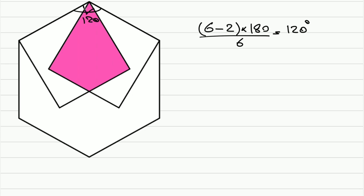This is a right angle. If you can see that, now this is 30 degrees. Same thing for the other side — this is also 30 degrees — and that means the one in the middle is 60 degrees.